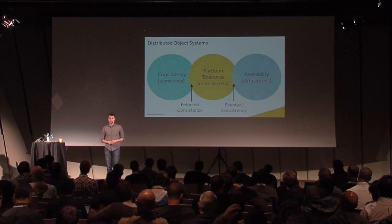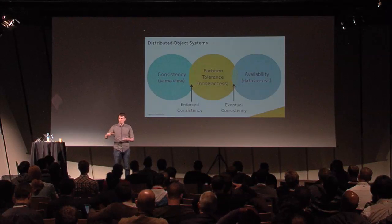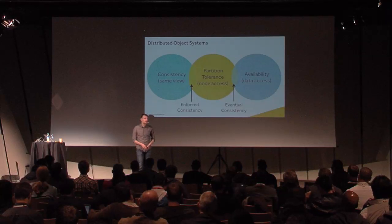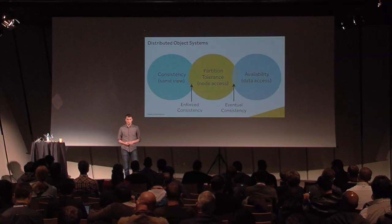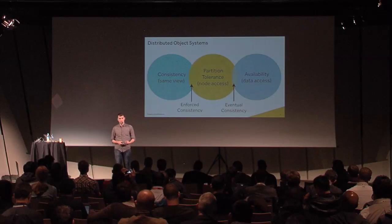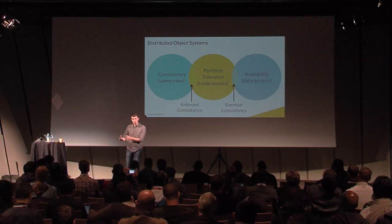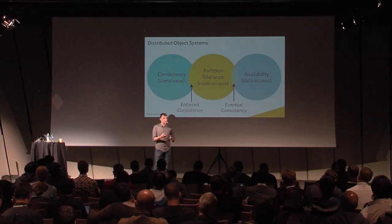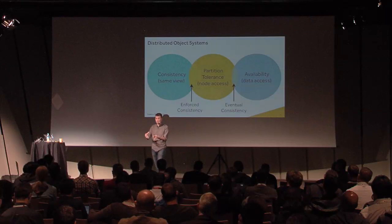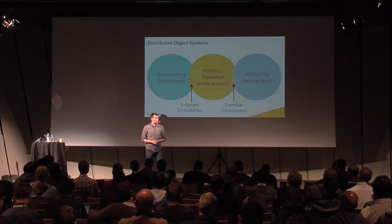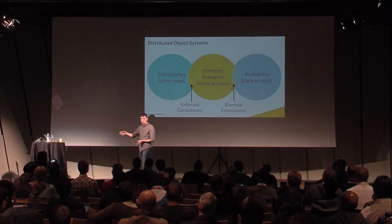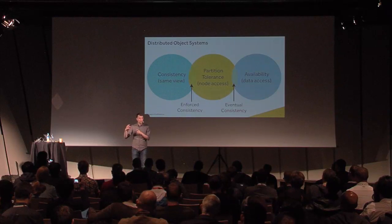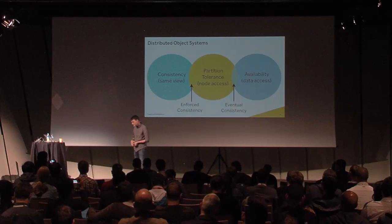When you're building a distributed system for availability and handling concurrent requests, there's a rule that says of the three principles of that system you can choose two and cannot have all three. Either you have something that is strongly consistent — meaning in the case of failures the system will not be available, but any time you ask a question you'll get the answer the whole system knows about right now — or on the other end is eventually consistent, meaning even if there is failure in the system it's still able to respond and will later eventually resolve any discrepancies in the data.